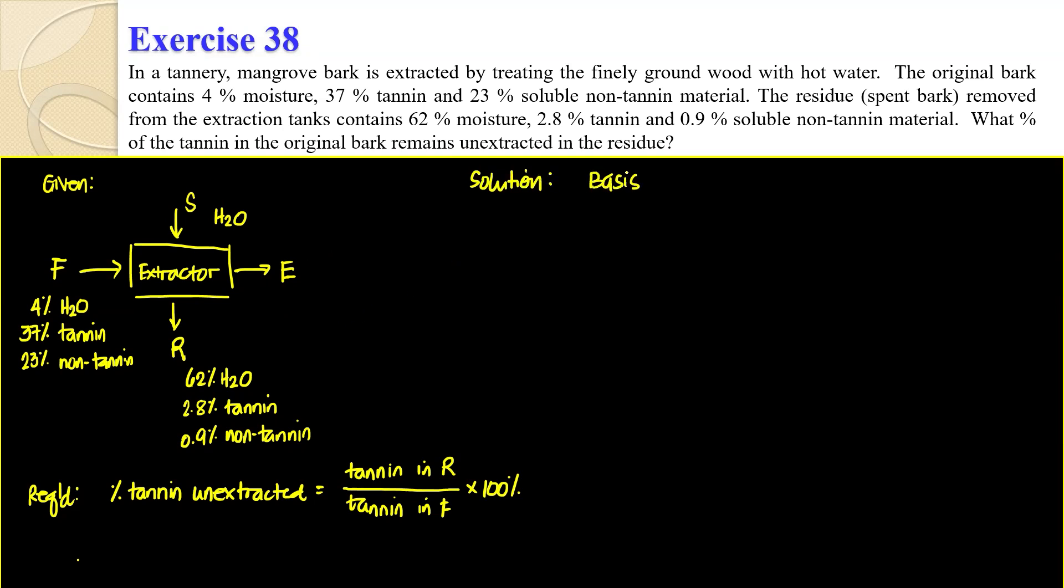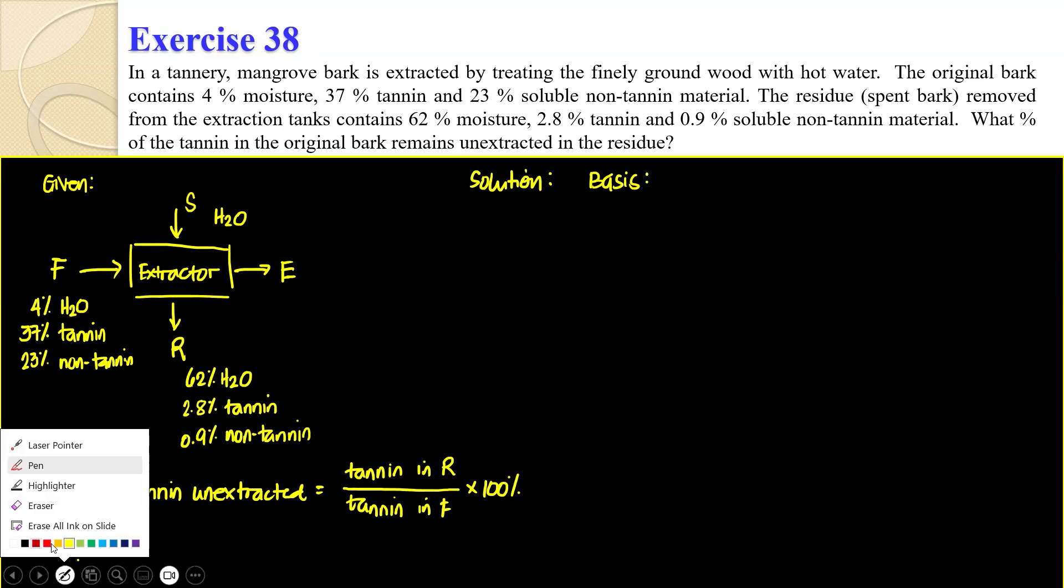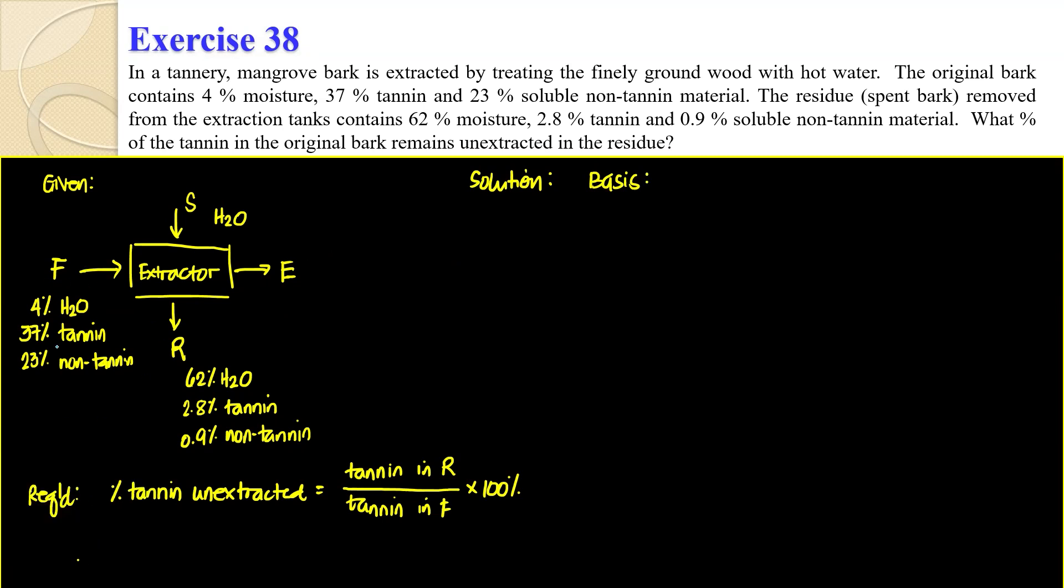So let us write our solution. Let's have a basis. But before we do anything else, let's check if it totals 100%. 4, 37, and 23, so this one is 64, it misses 36%. 62, 2.8, and 0.9, so this is 3.7, so that's 65.7. What's left is... 34.3%.